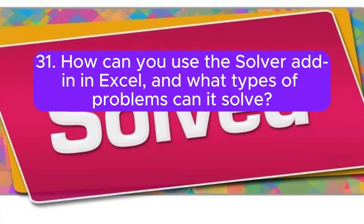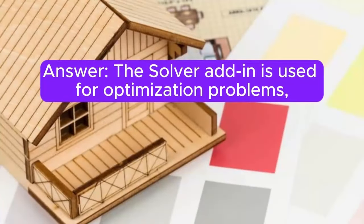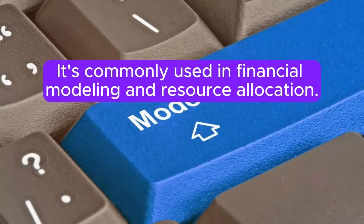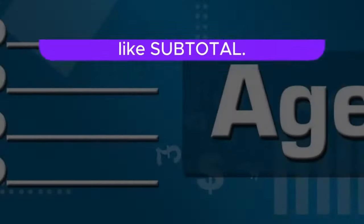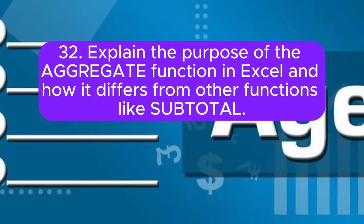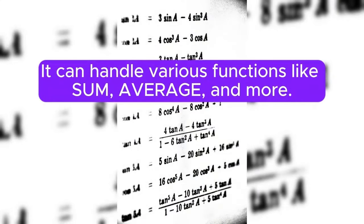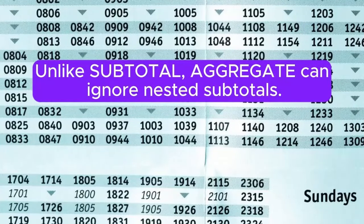Question 31: How can you use the Solver add-in in Excel, and what types of problems can it solve? The Solver add-in is used for optimization problems such as maximizing or minimizing a target cell by changing other cells subject to certain constraints. It is commonly used in financial modeling and resource allocation. Question 32: Explain the purpose of the AGGREGATE function in Excel and how it differs from SUBTOTAL. AGGREGATE performs calculations on a range while ignoring hidden rows and error values. It can handle various functions like SUM and AVERAGE. Unlike SUBTOTAL, AGGREGATE can ignore nested subtotals.